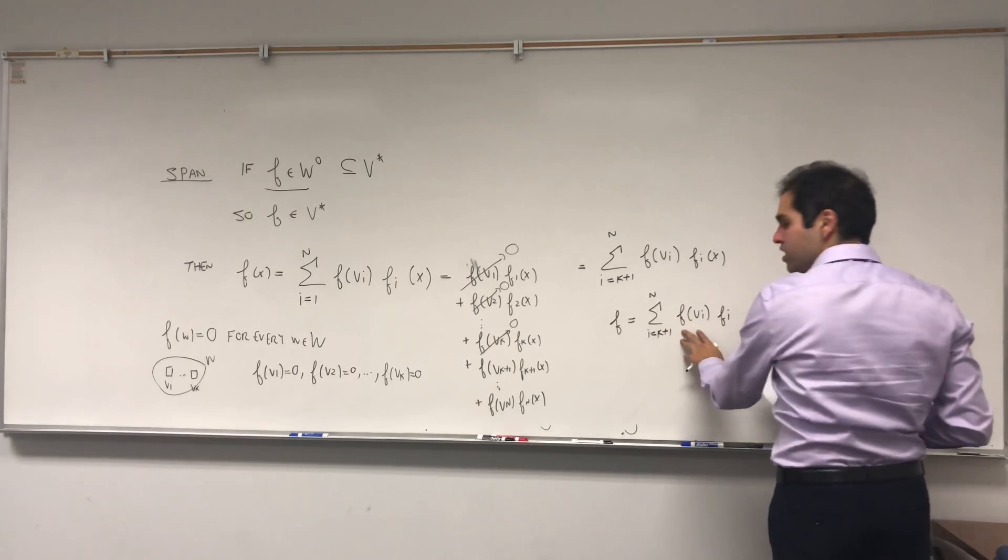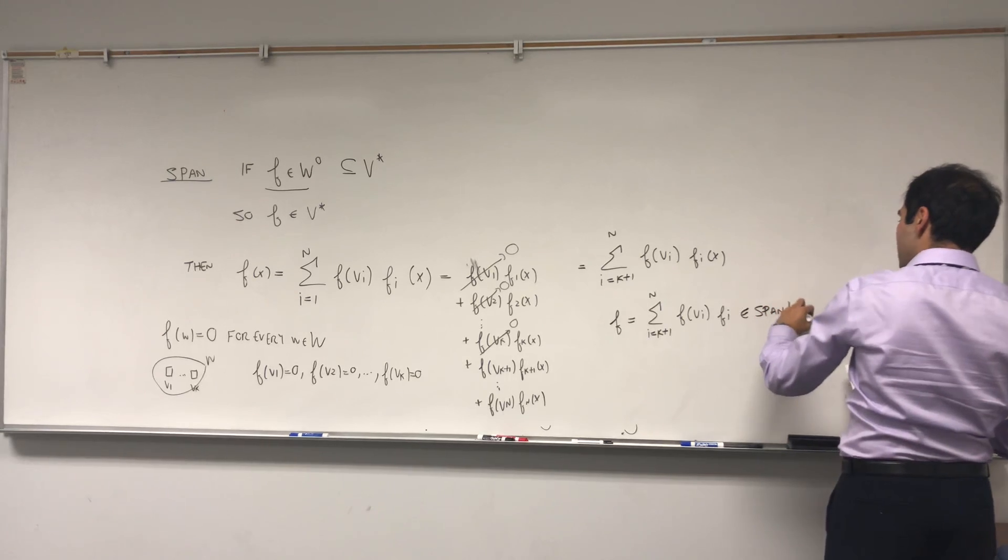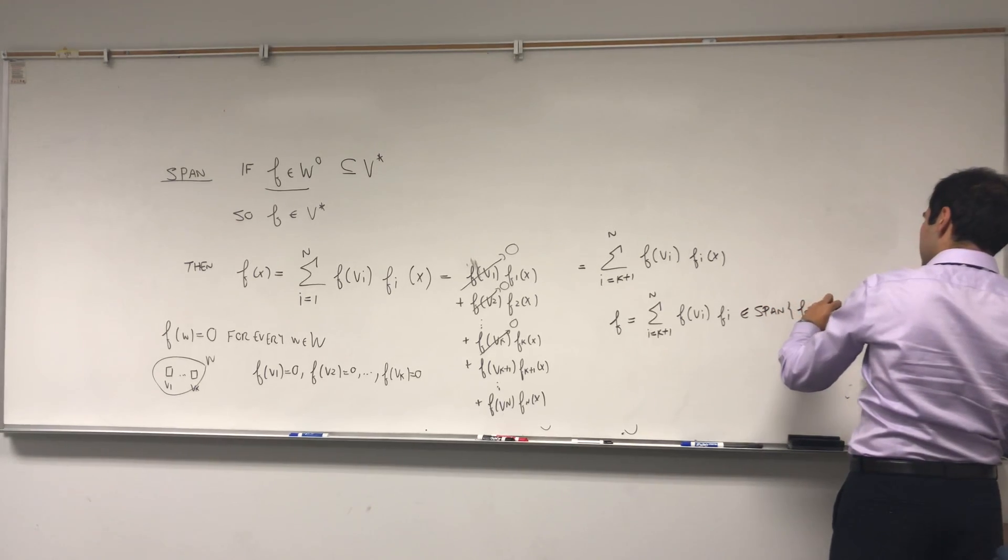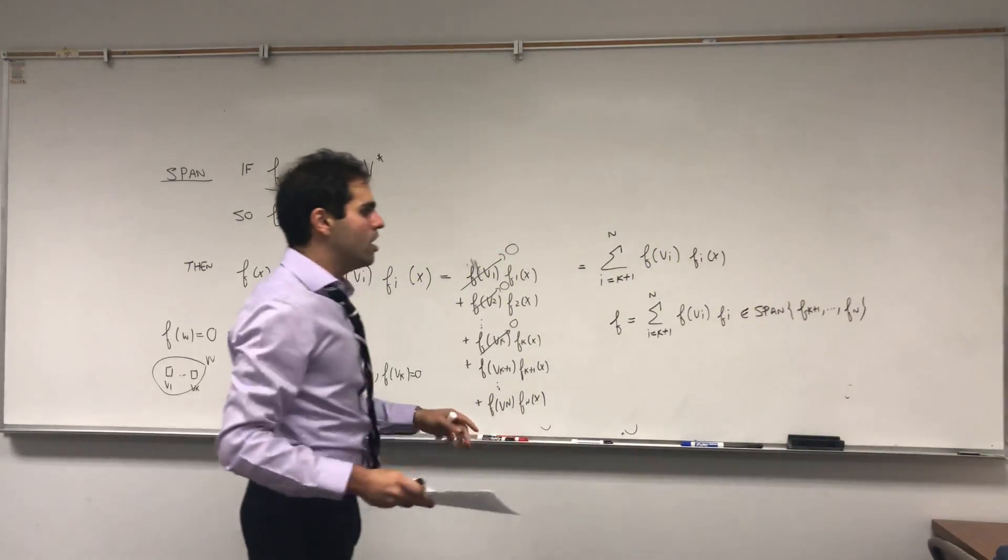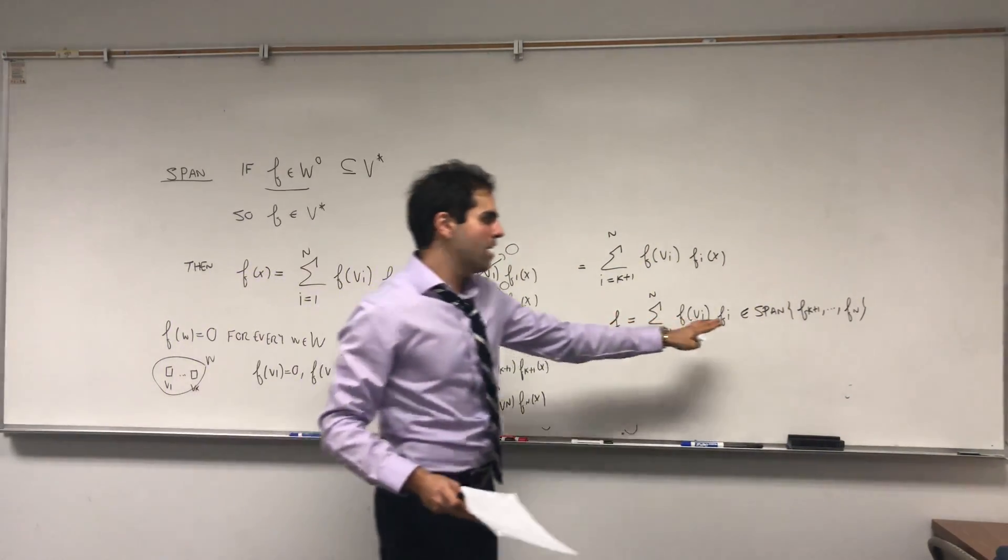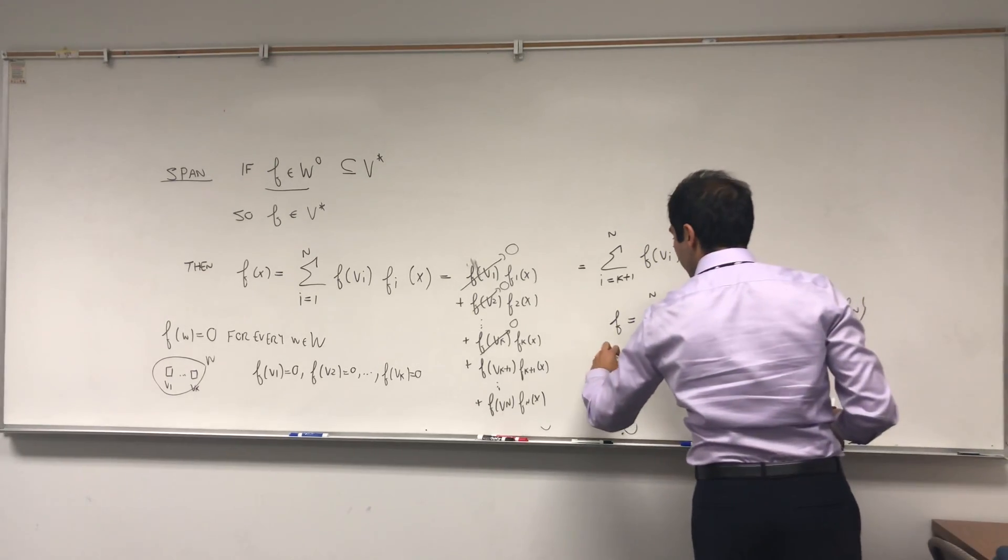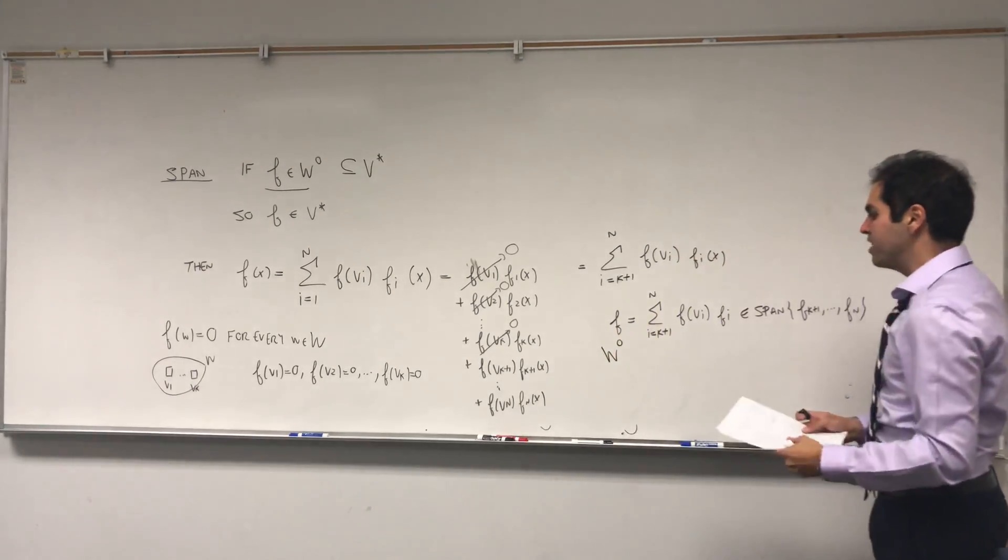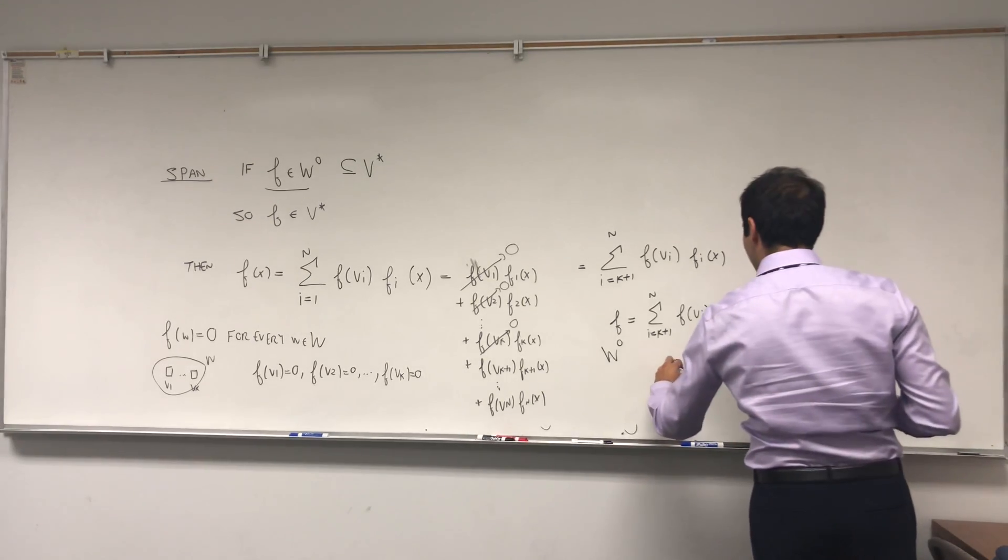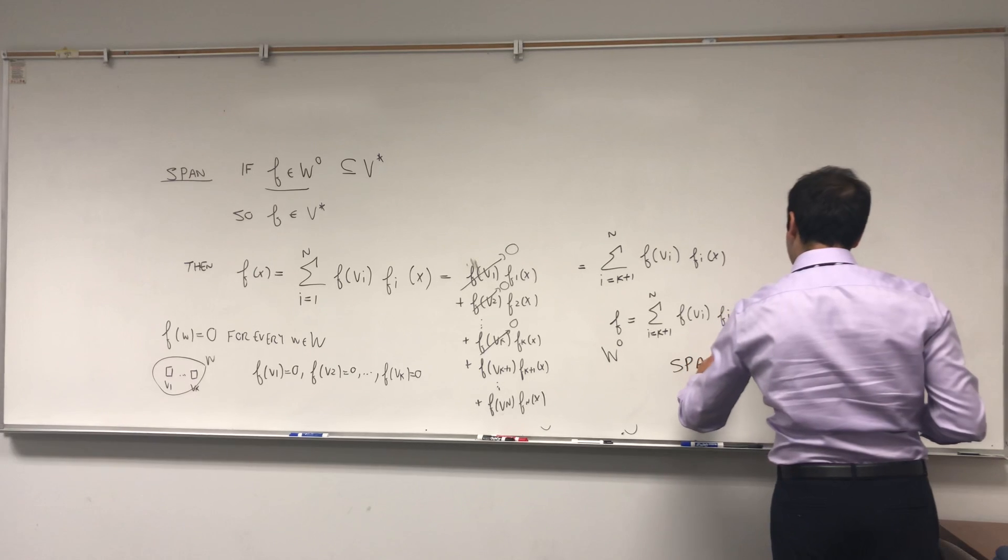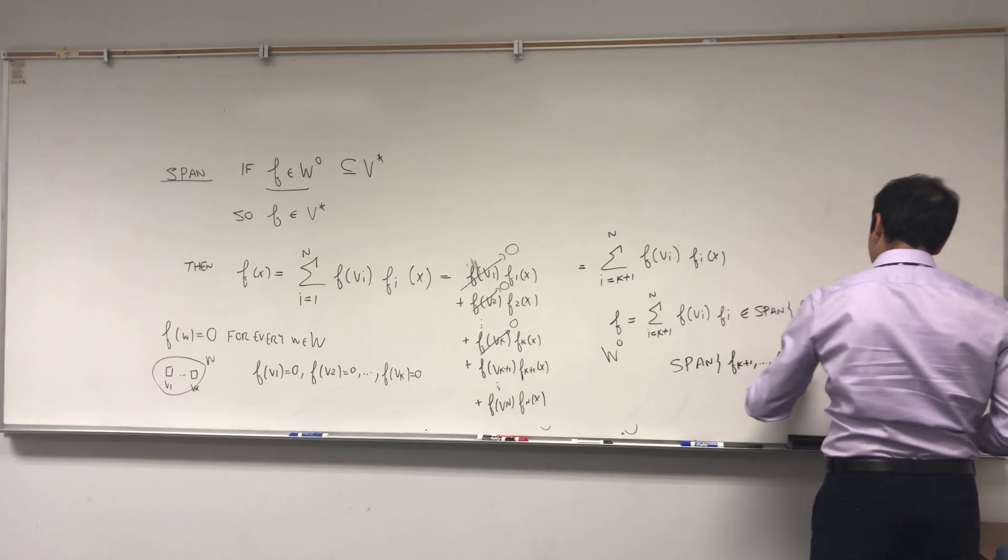But this thing, that's just an arbitrary constant. It's in the span of fk plus one up to fn, which is precisely what we wanted to show. So we wanted to show that the span of this set is precisely w naught. And what we've done is we've picked an arbitrary element in w naught and showed that it's in the span. So in particular, we get what we have, the span of fk plus one up to fn equals w naught.